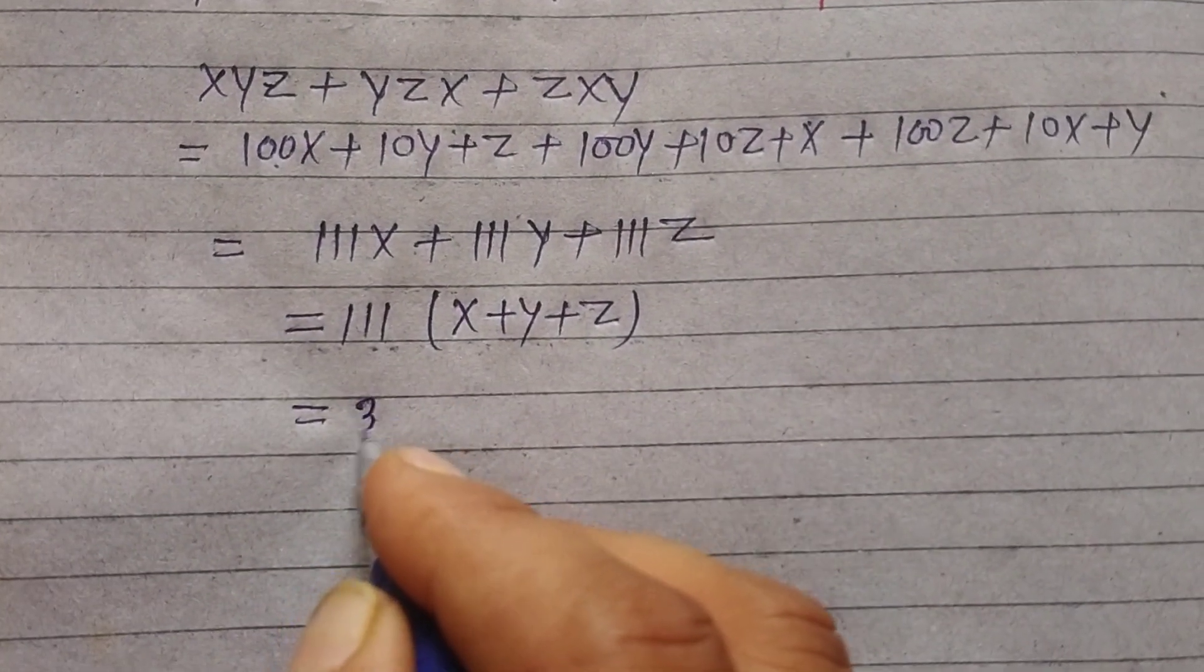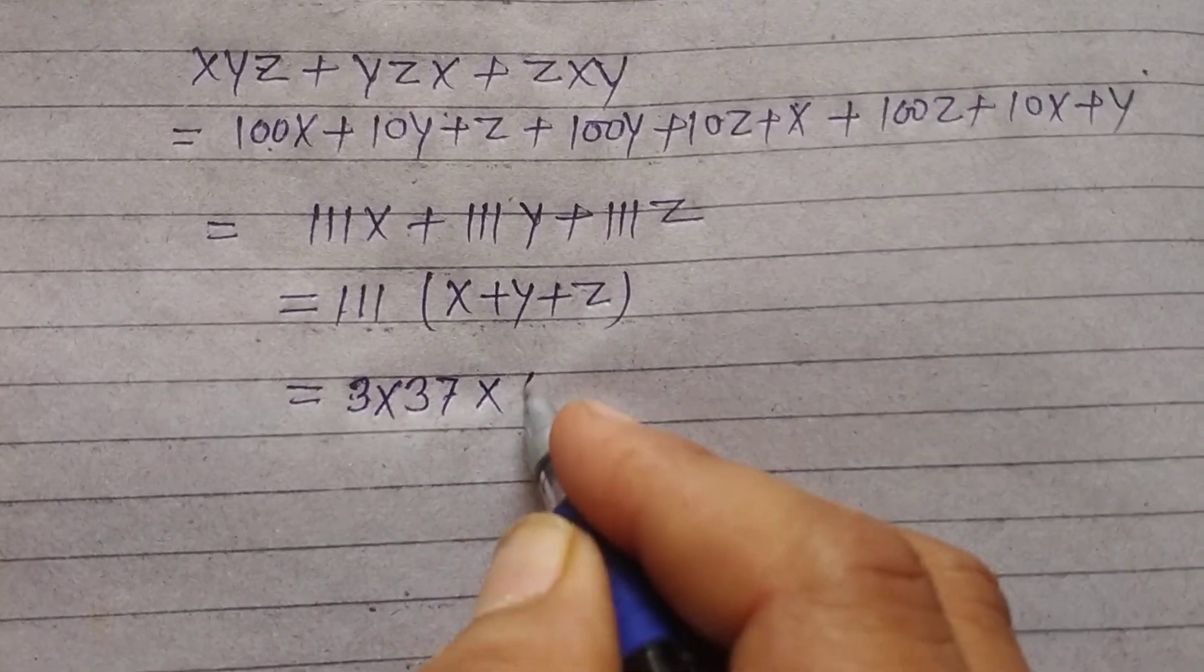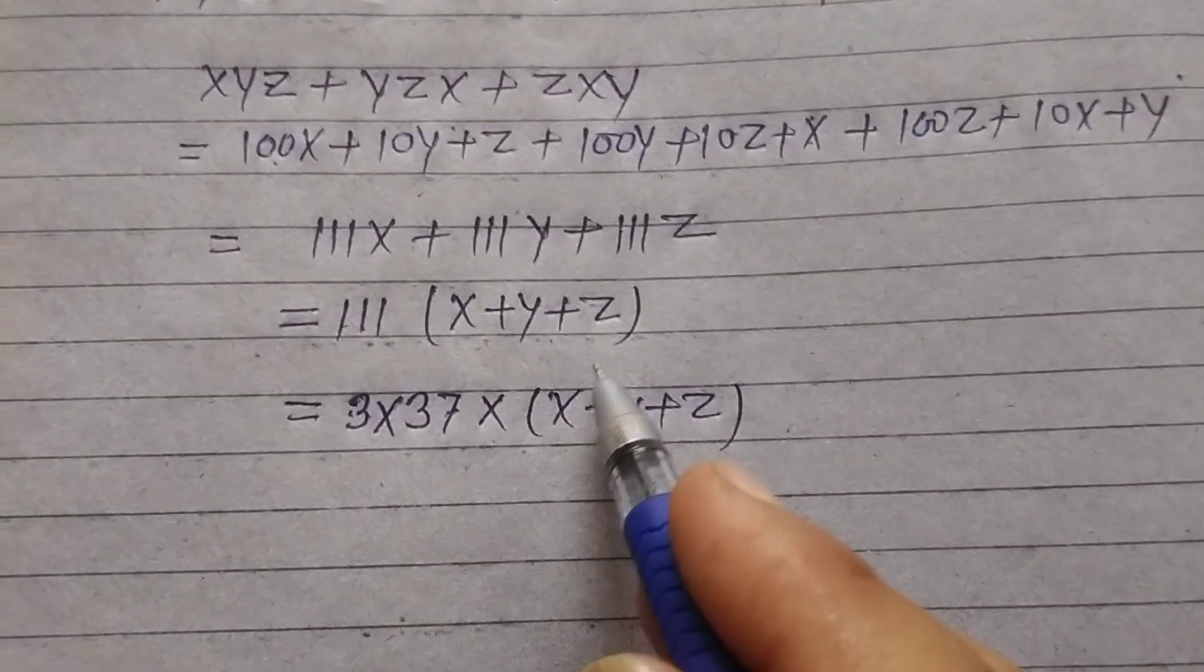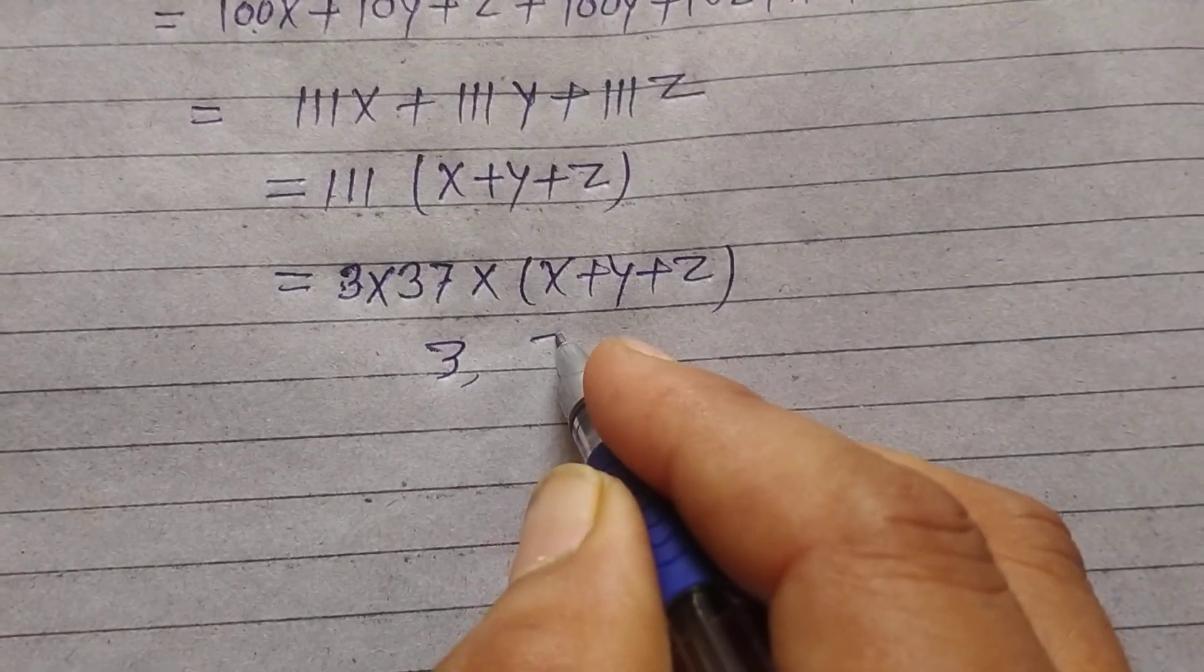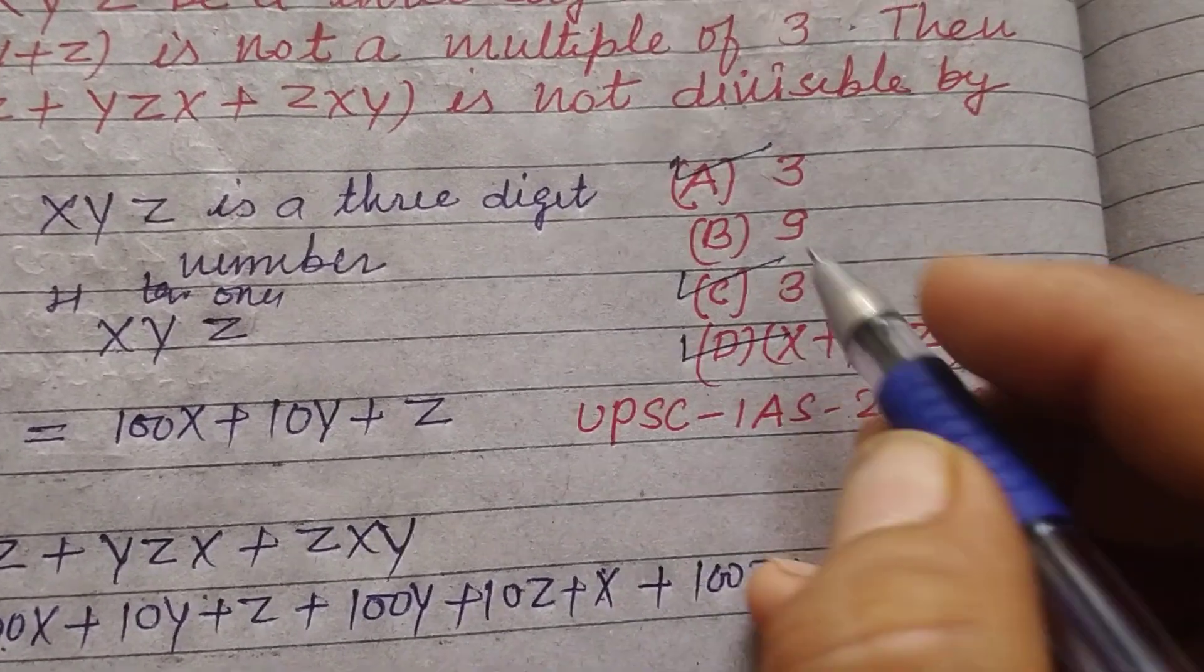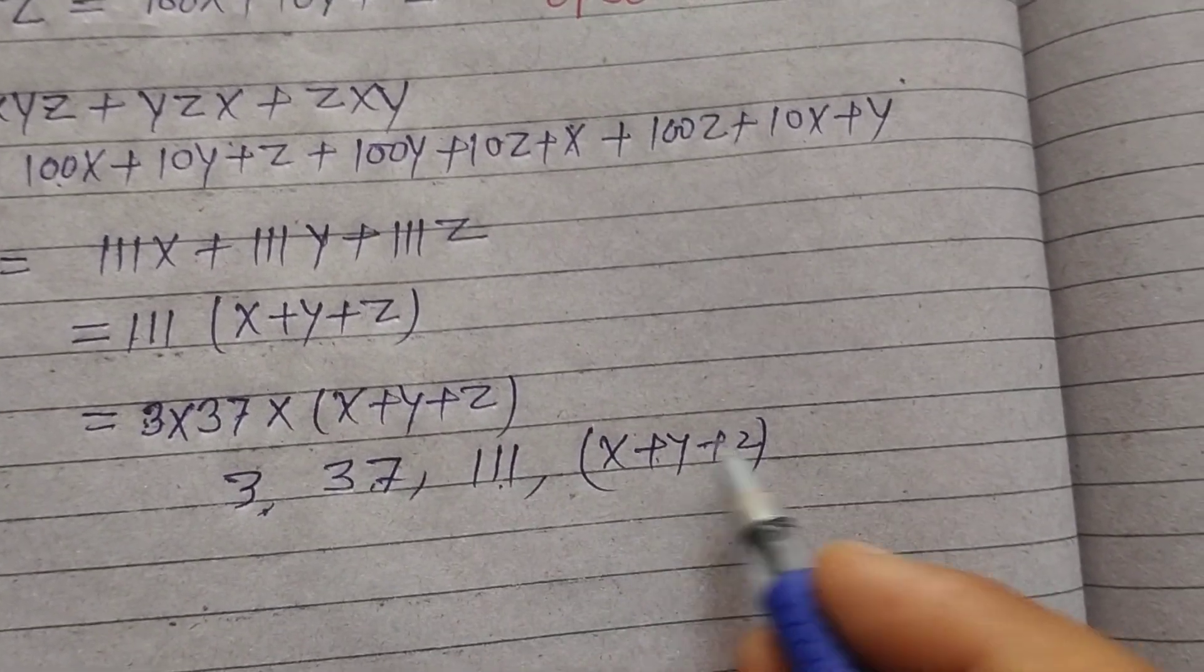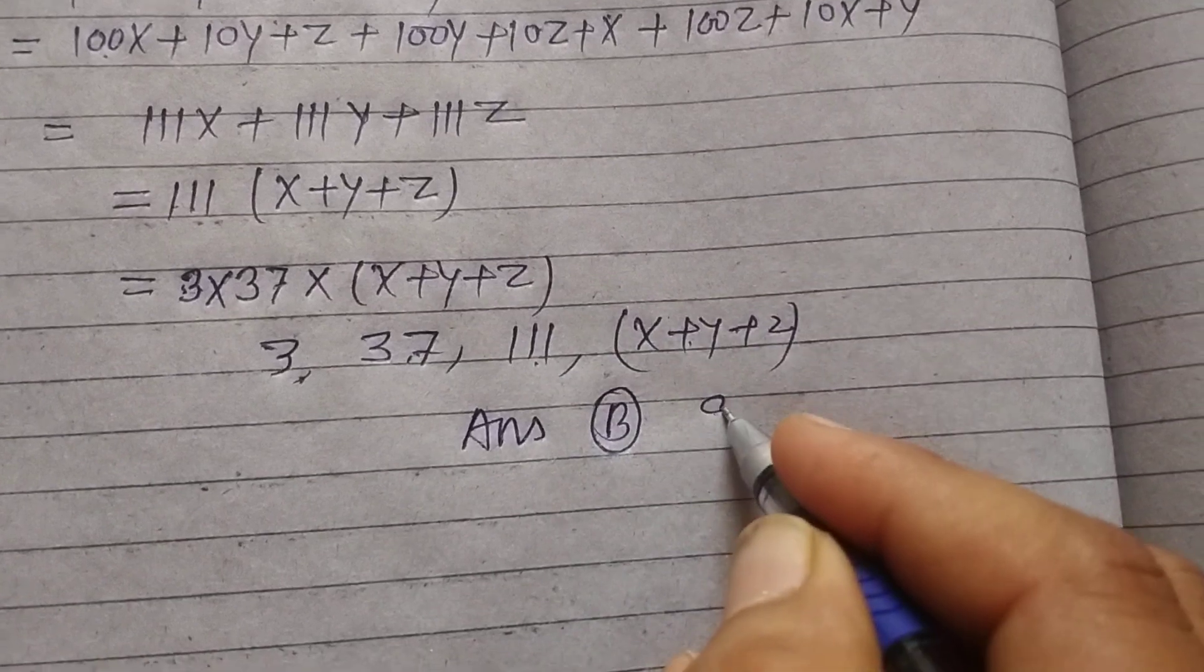111 factors as 3×37. So 3, 37, 111, and (x+y+z) are the factors of the given number. 3 is also a factor, 37 is also a factor, 111 is also a factor, but 9 is not. It is divisible by 3, 37, 111, and (x+y+z). Therefore, the answer is B, which is 9.